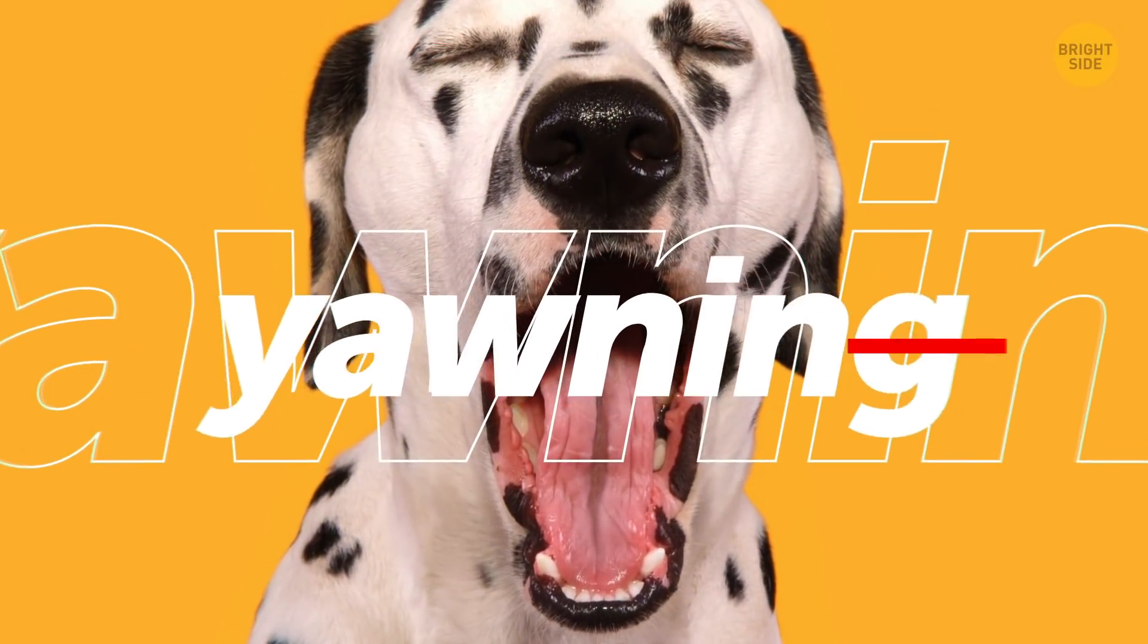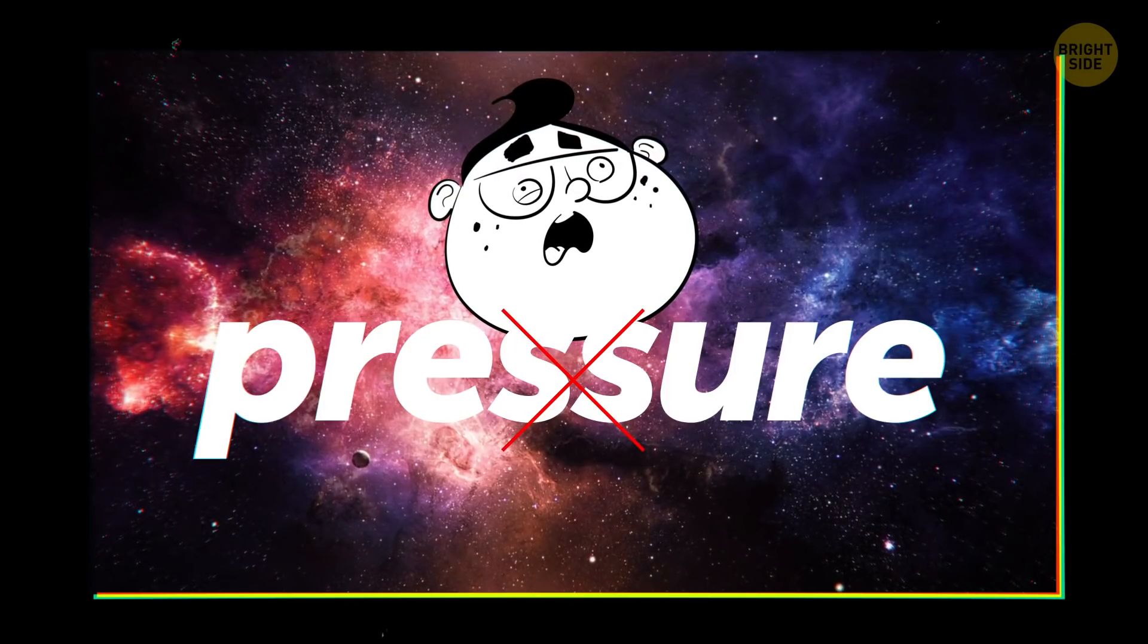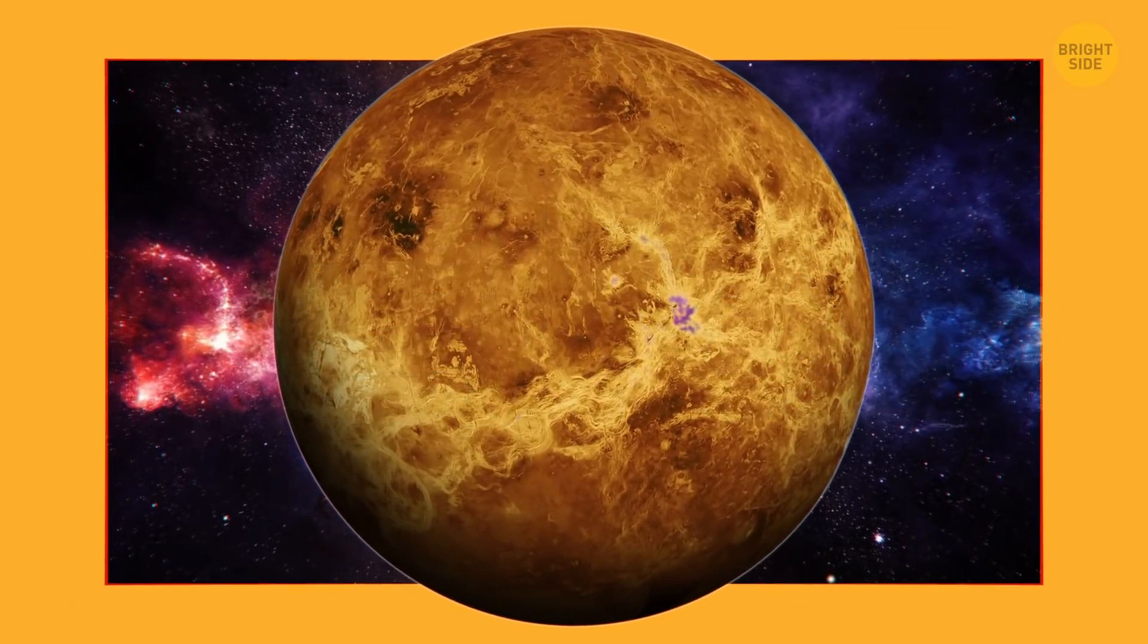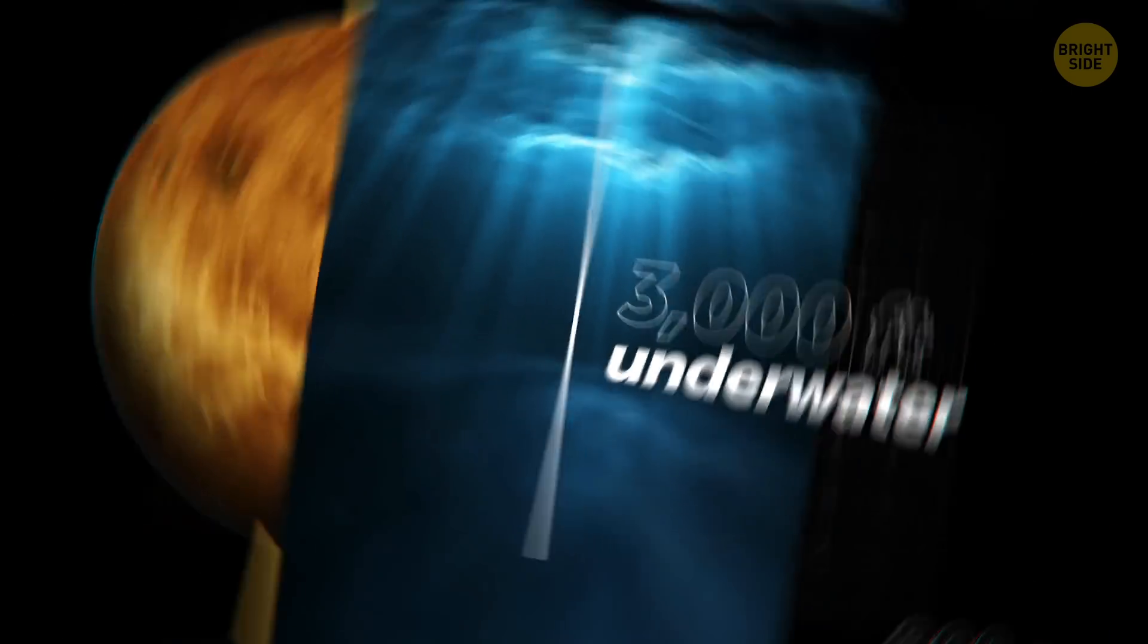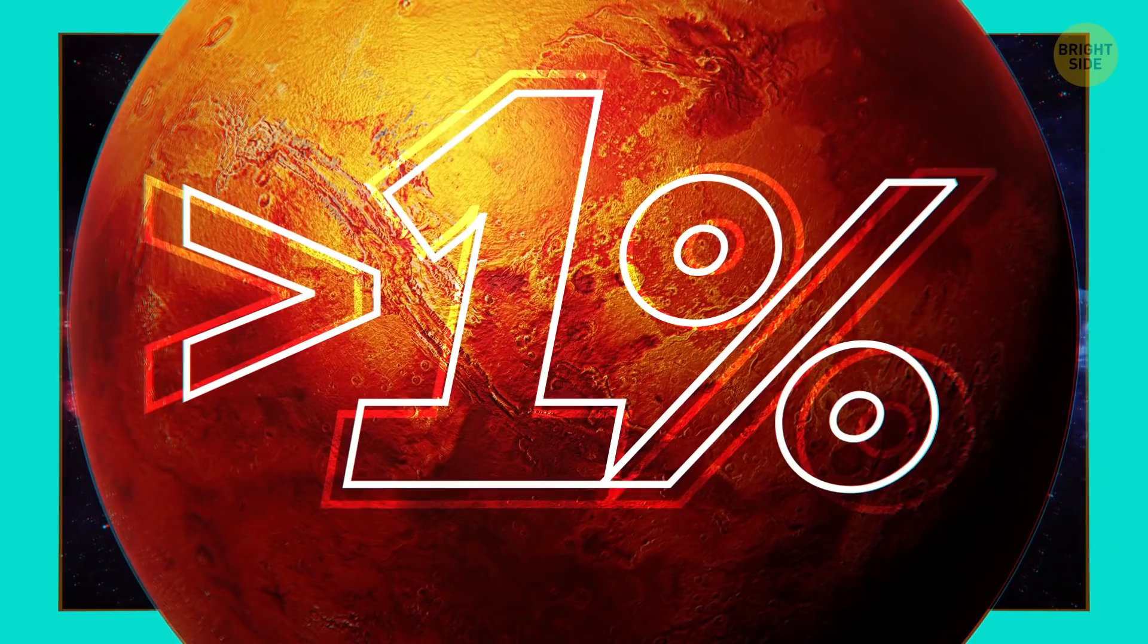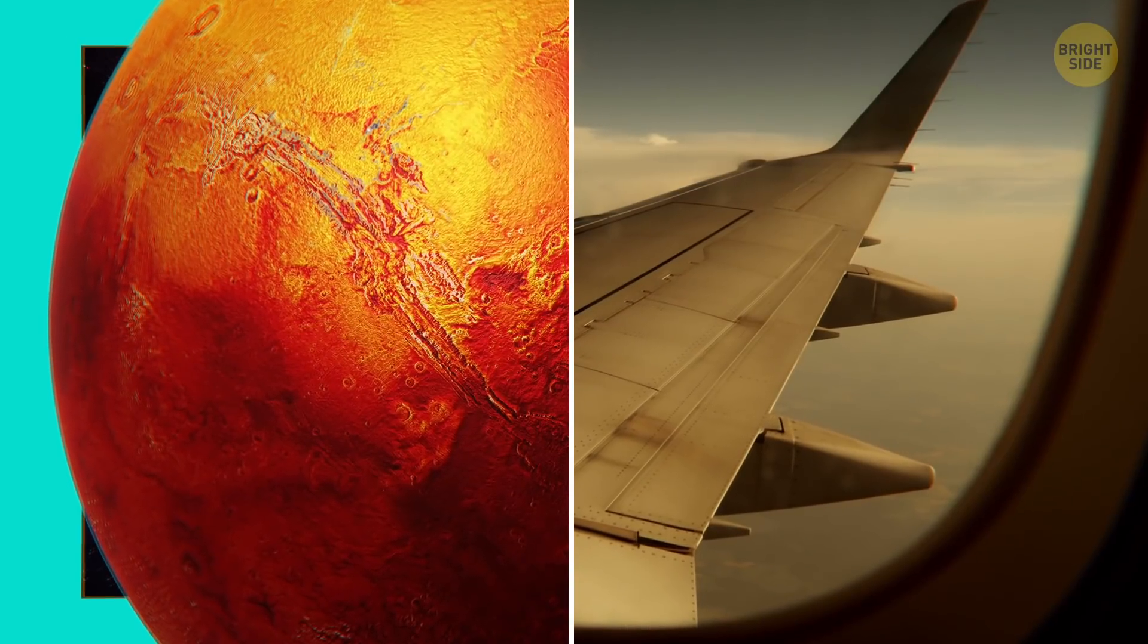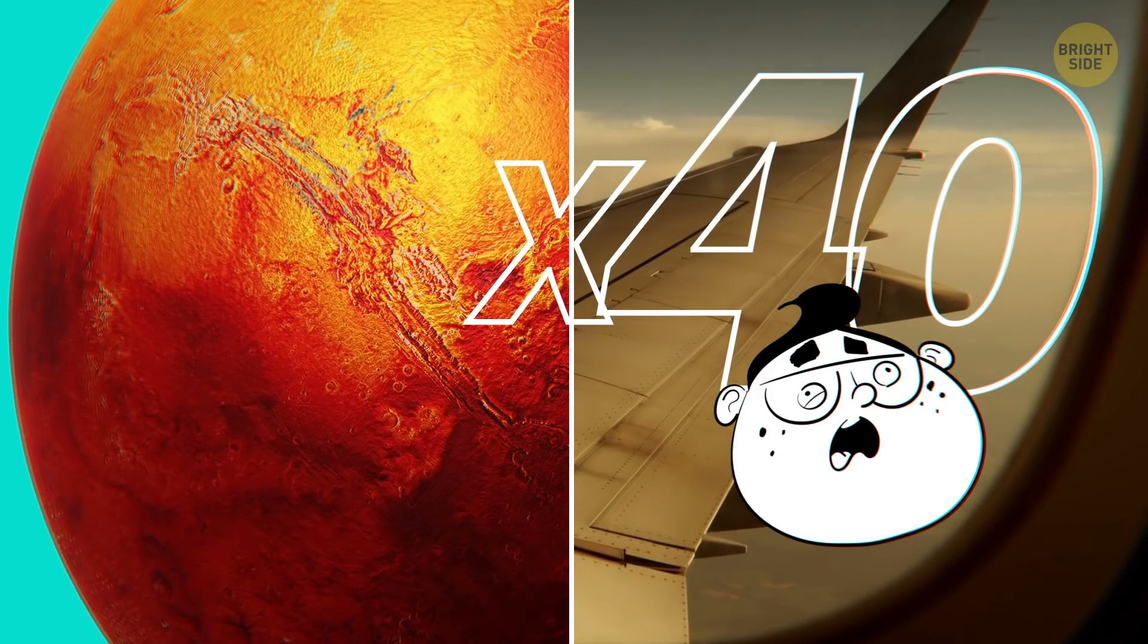And forget about yawning on your new home. Minus the obvious no-oxygen thing, you couldn't find a place with the right pressure for it. Venus would be way too much. The pressure there is what it's like at 3,000 feet underwater. Mars wouldn't give enough. It's less than 1% of the pressure on Earth. Even the air outside a plane at cruising altitude is 40 times thicker, and that stuff's unbreathable.